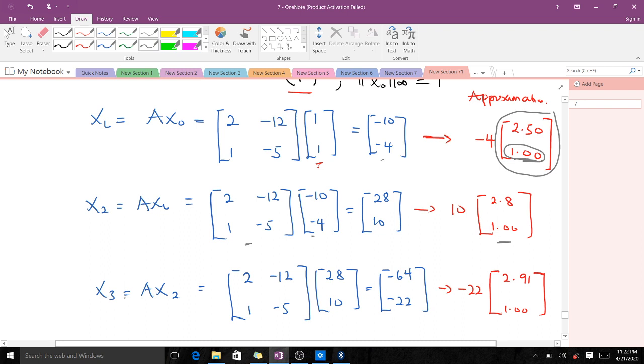For the third iteration, x₃ = Ax₂. We bring -22 out so the bottom element becomes 1, giving us -22(2.91, 1.0). At the third iteration, this becomes our approximated eigenvector.